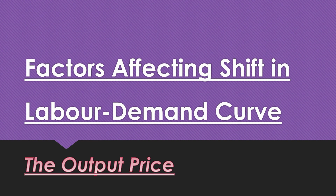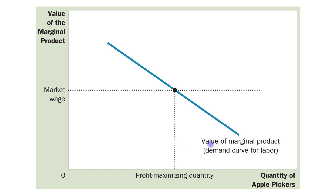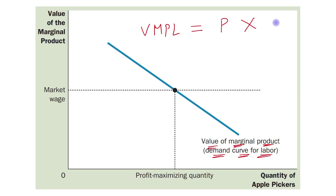Hello students. Today's topic is factors affecting shift in labor demand curve, in which the first factor is the output price. In our last video we learned that the VMPL curve — the value of marginal product of labor — is the demand curve for labor. We also know that VMPL equals the price of output times the marginal product of labor. So obviously, once the output price changes, it will lead to a change in VMPL.